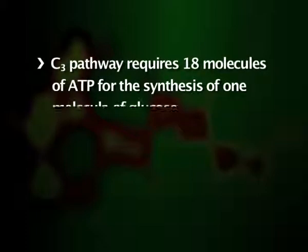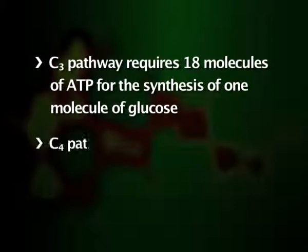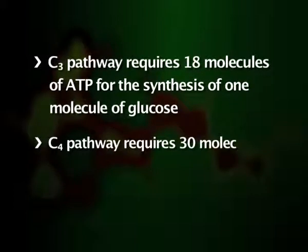In the C4 cycle, every carbon dioxide molecule has to be fixed twice: first by the three-carbon organic acid and second by RuBisCO. The C4 pathway uses more energy than the C3 pathway. The C3 pathway requires 18 molecules of ATP for the synthesis of one molecule of glucose, whereas the C4 pathway requires 30 ATP molecules. However, the double carbon fixation pathway confers greater photosynthetic efficiency on C4 plants over C3 plants because the C3 enzyme RuBisCO is highly inefficient in the presence of elevated levels of oxygen.